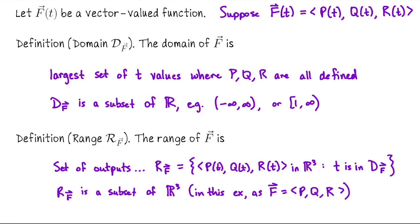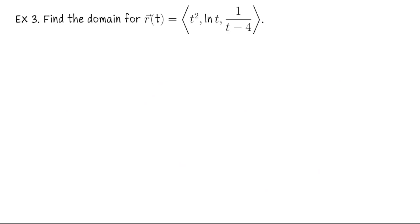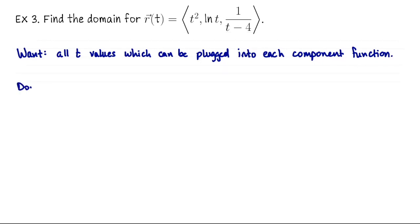We're going to finish this lecture by just looking at an example of a vector-valued function, and we'll find its domain. Let's find the domain for r(t). What we want is to find all t values which could be plugged into each component. So what we're going to do is find the domain for each component function, and then we want to combine that information. Perhaps Q is defined when time equals 10, but P is not. We would remove 10 from the domain. So we basically whittle our domains down to find the collection of t values which work for every component function.